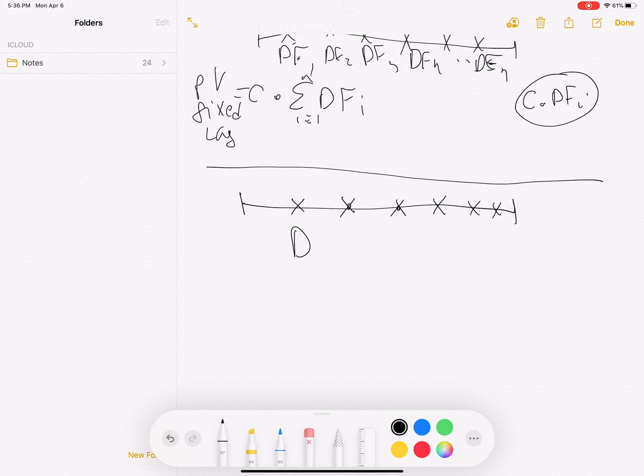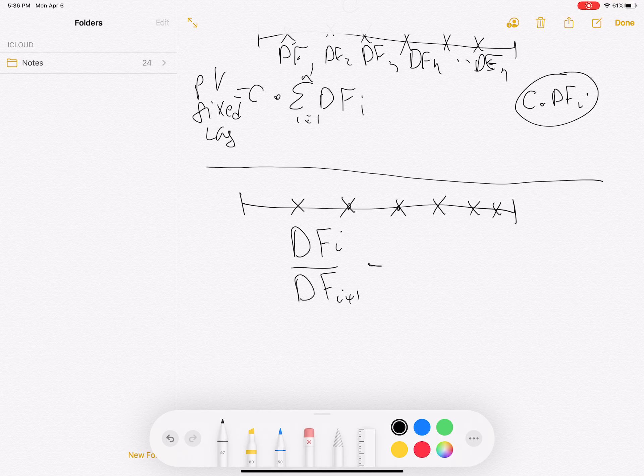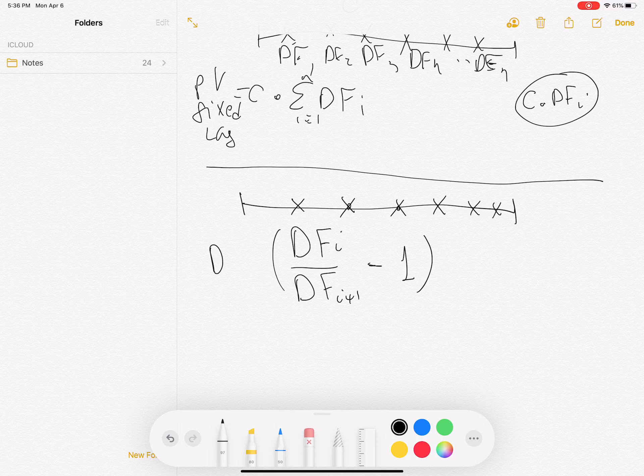Here I'm going to multiply, because I'm paying here, I'm going to multiply by DFi+1. So what I'm getting here is as follows: I'm getting DFi minus DFi+1. This is the present value of my payment.